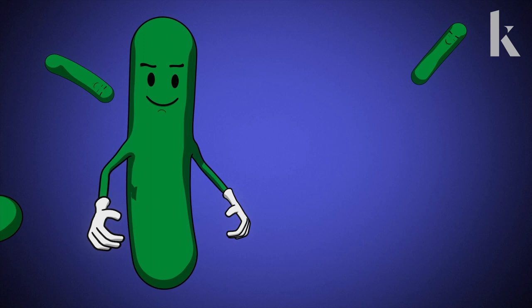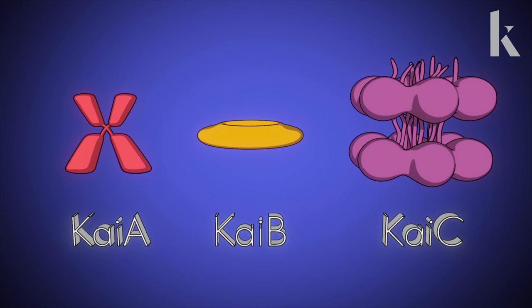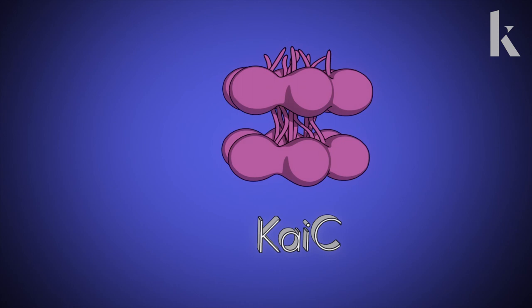Cyanobacteria can't tick off time by counting one-one-thousand, two-one-thousand. Their clock is made of just three proteins, all named Kai, short for the Japanese character Kaiten, for cycle.